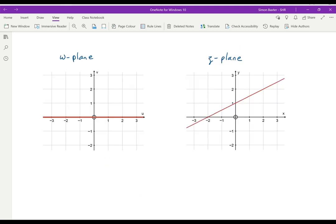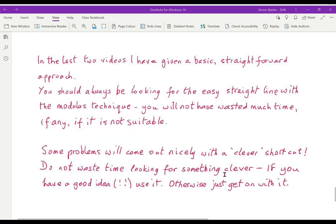Which is a straight line. Here we've started with the W plane, the real axis, and we've mapped it onto the line 2y minus x minus 2 equals 0. In the last two videos I've given a basic straightforward approach. You should always be looking for the easy straight line. With the modulus technique, if it's not suitable you will not have wasted much of your time. Some problems will come out nicely with a clever shortcut. Don't waste your time looking for something clever. If you manage to find a good idea then use it. Otherwise just get on with the question.